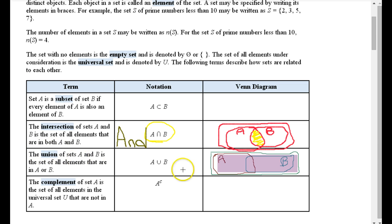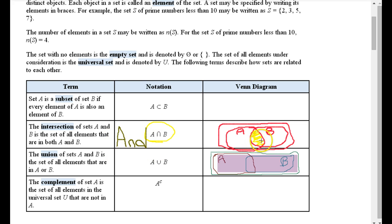An AND-type bank account — like with a business partner — means both parties must be present to take money out. Partner A AND partner B have to be present. The union is an OR account; either party can show up and it qualifies as a member of the set. So I write OR for union. Now lastly, we have the complement of A, written as A with a superscript c. That means the complement of set A.